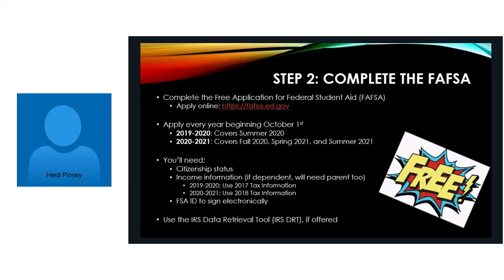If you don't have your tax information handy, when you get to the income information portion of the FAFSA form, there is a tool called the IRS Data Retrieval Tool that connects directly with the IRS. You don't have to have any information handy — you can pull it directly from the IRS if you know your address, your Social Security number, and your date of birth. It will pull it right into your FAFSA form, and you can pretty much complete the FAFSA form in about 20 minutes.